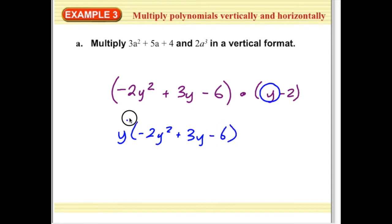So y times negative 2y squared plus 3y minus 6. I distribute all the way through when I multiply by y like that. So negative 2y squared times y is negative 2y cubed plus 3y squared minus 6y.